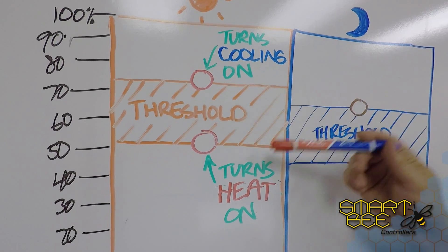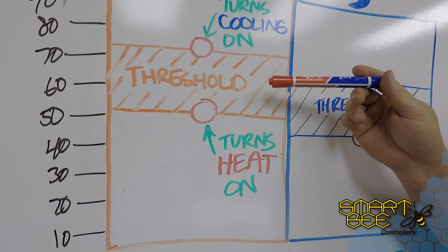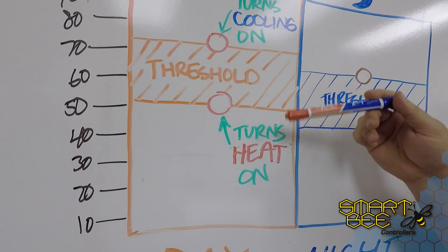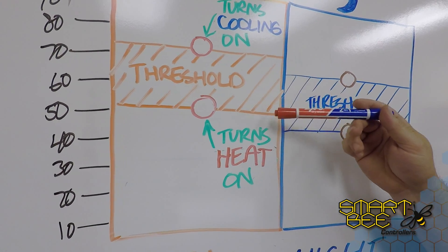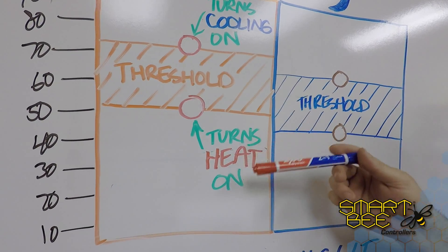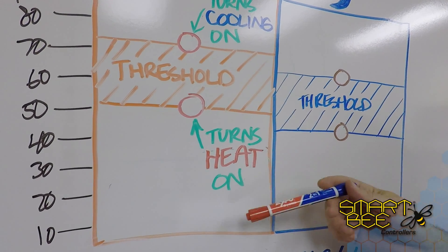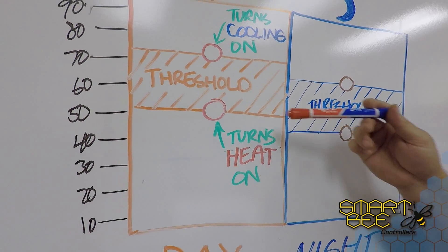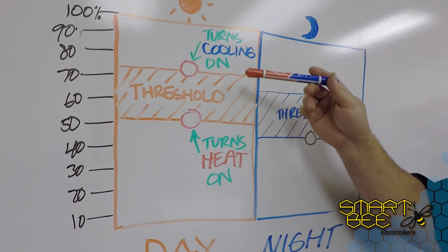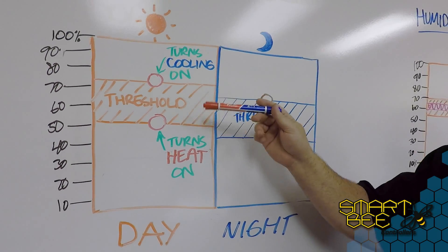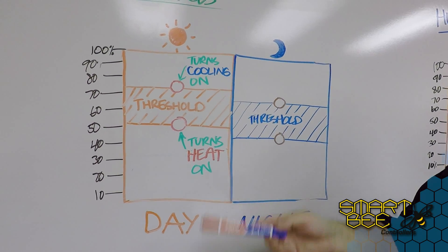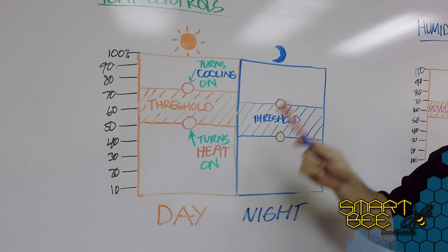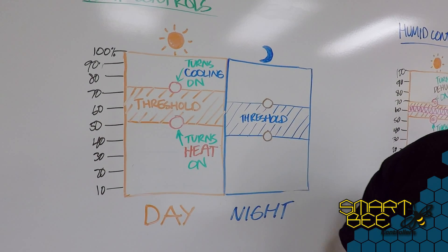Likewise, at the bottom end, should your room fall below the acceptable level at the threshold — in this case of temperature — it will turn heaters on in order to get it back to its acceptable range. We also offer this feature for both daytime and nighttime settings.